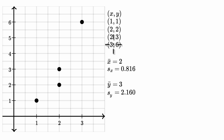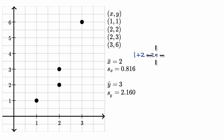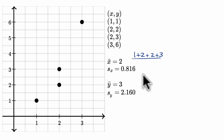We assume that these are samples of the x and the corresponding y from a broader population. So we have the sample mean for x and the sample standard deviation for x. The sample mean for x is quite straightforward to calculate — it would just be one plus two plus two plus three over four, which is eight over four, which is indeed equal to two.